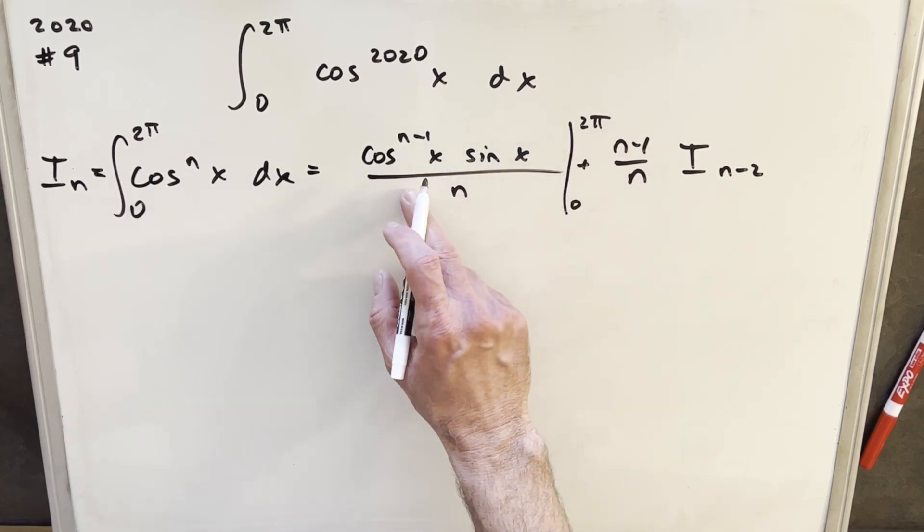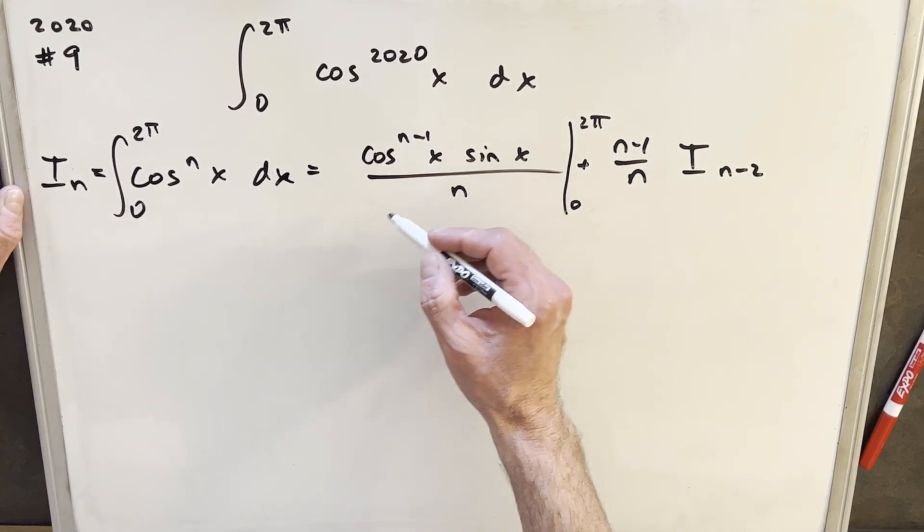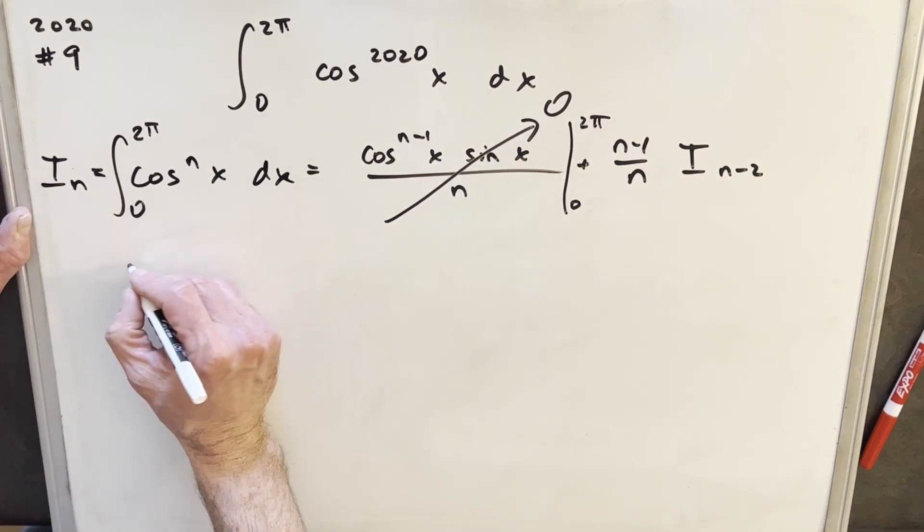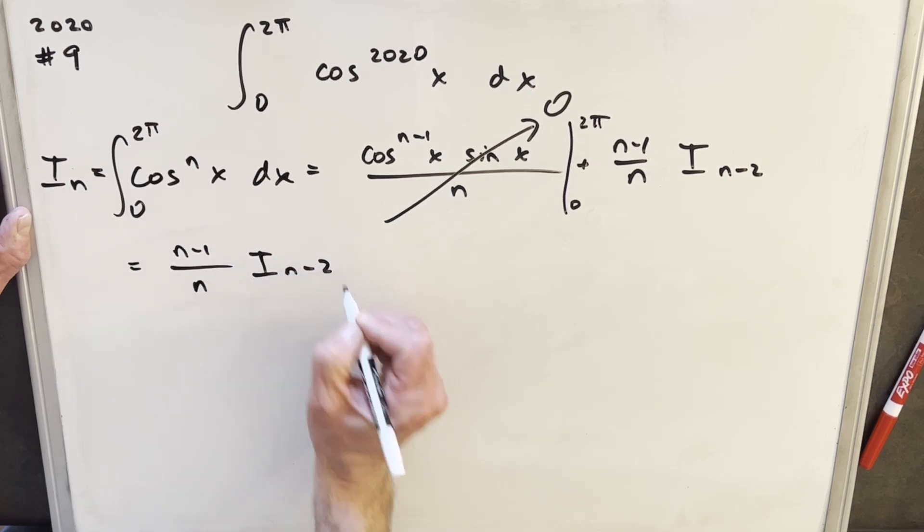Same thing with 3 pi over 2 or pi or whatever. So we have this set up where this is going away. This is all 0. So with these bounds, we can really reduce our formula to n minus 1 over n, i sub n minus 2.